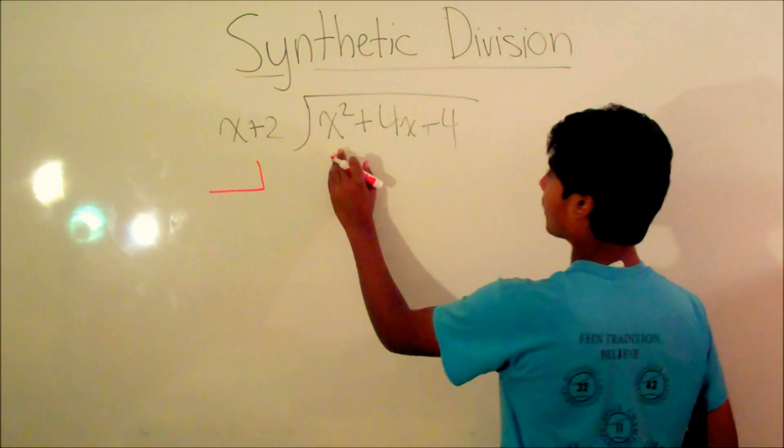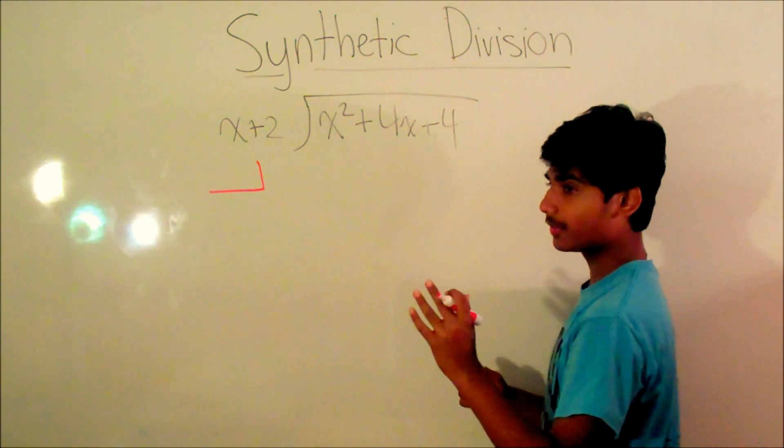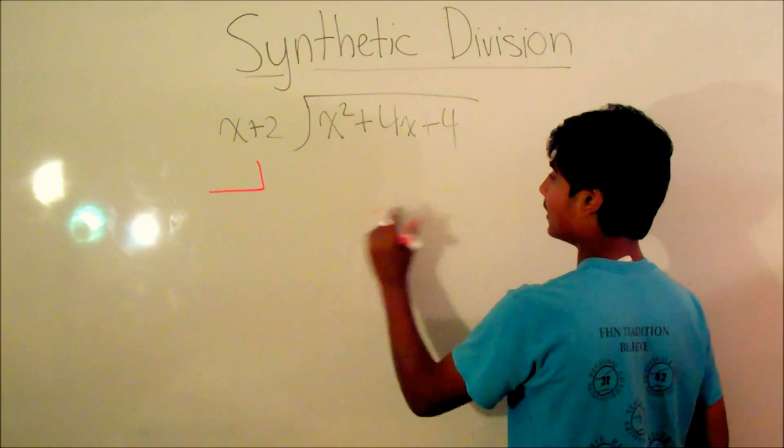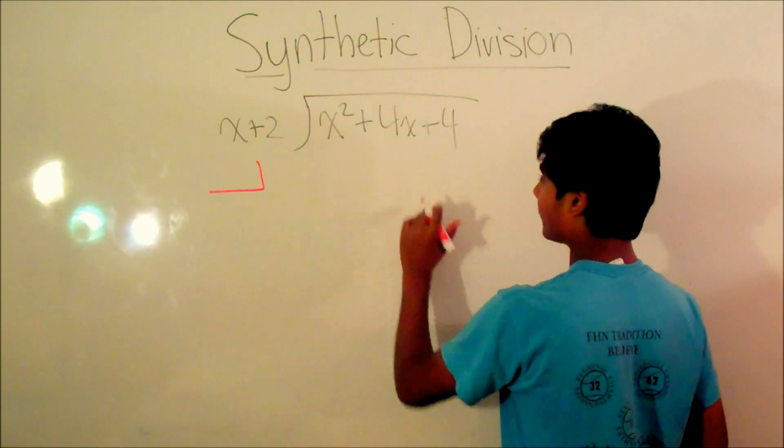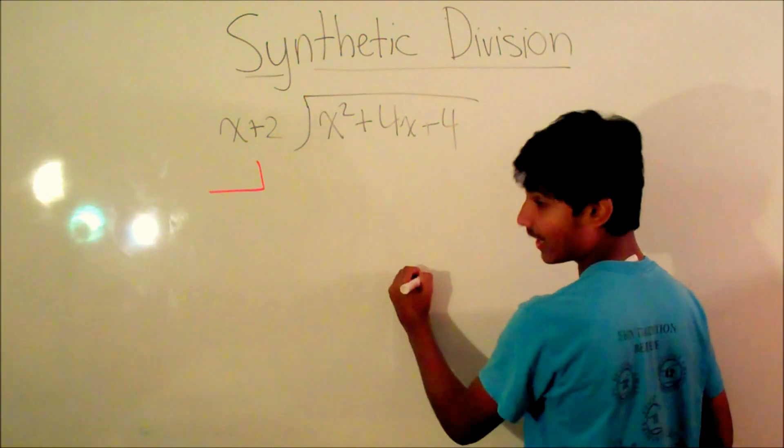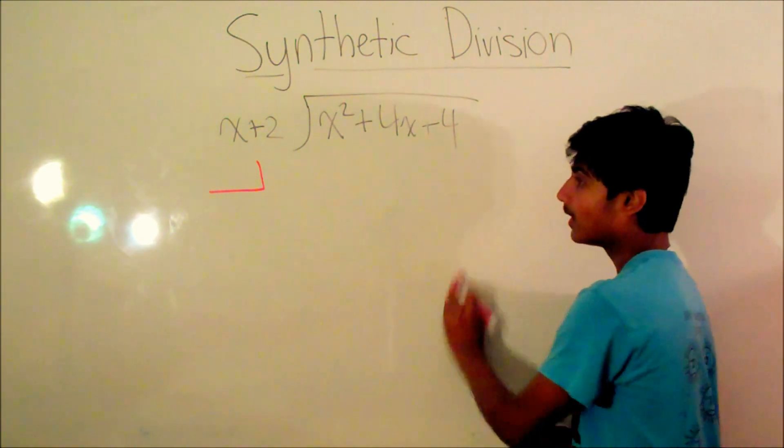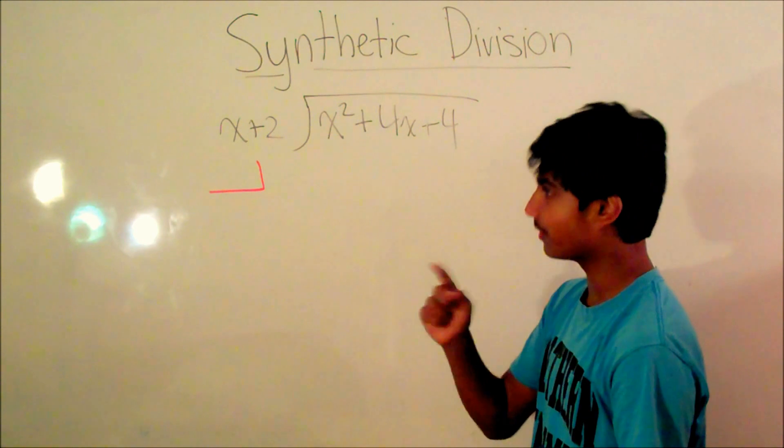and then you put all the coefficients in one column, and the last number you have to put a line under it, and that's going to be the remainder. So this is what I'll show you in a minute.